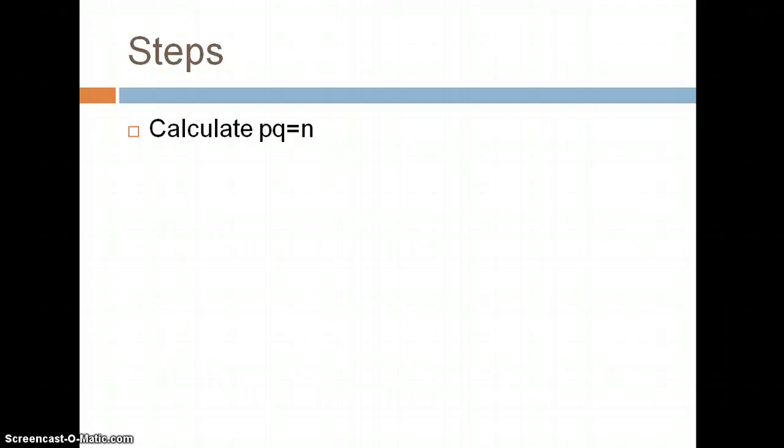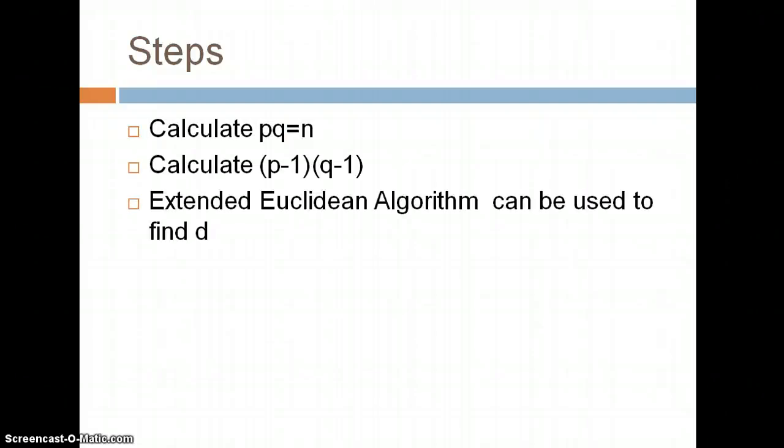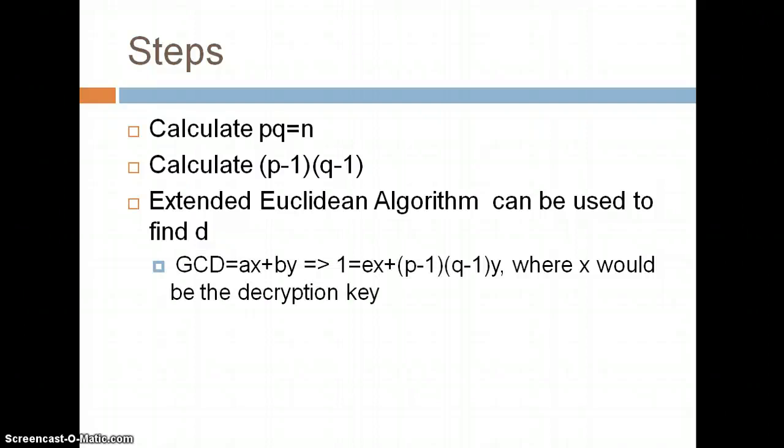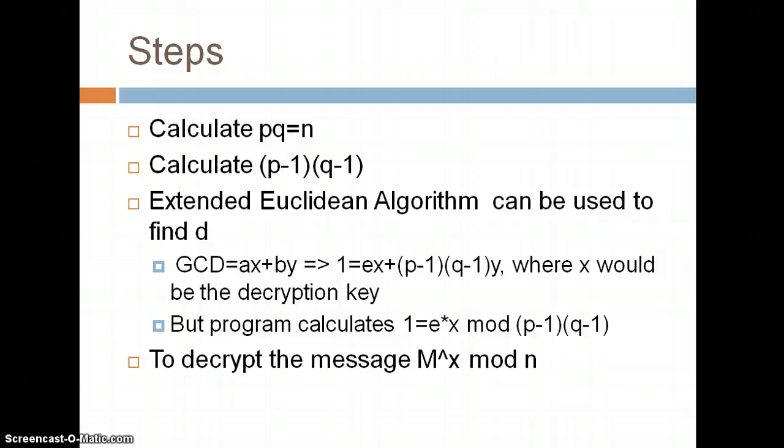The steps my program does is it calculates pq, which is n. It calculates (p-1)(q-1). And then the extended Euclidean algorithm can be used to find d. To remind you from what we went over in class, the extended Euclidean algorithm writes the gcd of two numbers a and b as ax+by, where x and y would be integers. In our case, the gcd would be 1, because e and (p-1)(q-1) are relatively prime. And then we would try and find the integers x and y, where x would be the decryption key. But to be honest, I wasn't quite sure how to get my program to do this. So I had it calculate 1=ex mod (p-1)(q-1), and basically I had it increase x until we got a true statement.